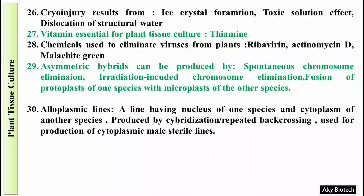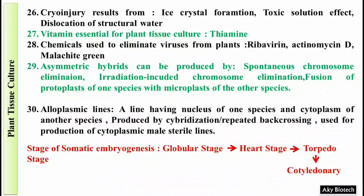Question 31: Stages of somatic embryogenesis — this question has been asked many times. The order is: first globular stage, then heart stage, then torpedo stage, then cotyledonary stage. So the sequence is G (globular), H (heart), T (torpedo), and C (cotyledonary).